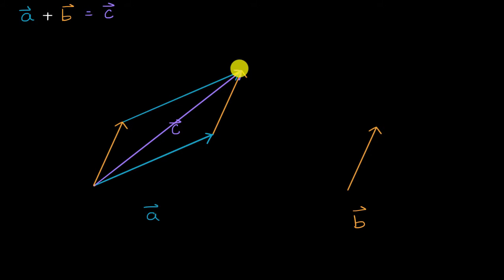Now another way of thinking about it is we've just constructed a parallelogram with these two vectors. By putting both of their tails together, and then by taking a copy of each of them and putting that copy's tail at the head of the other vector, you construct a parallelogram like this.